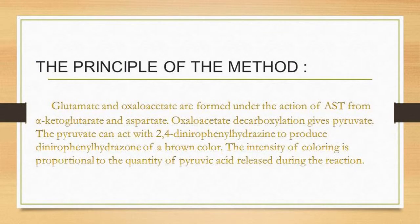The principle of the method: glutamate and oxaloacetate are formed under the action of AST from alpha-ketoglutarate and aspartate. Oxaloacetate decarboxylation gives pyruvate. The pyruvate reacts with 2,4-dinitrophenylhydrazine to produce a dinitrophenylhydrazone of a brown color. The intensity of coloring is proportional to the quantity of pyruvate acid released during the reaction.